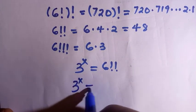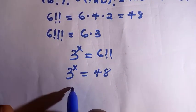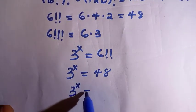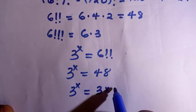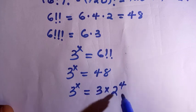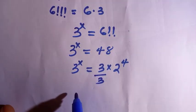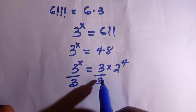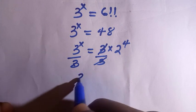Then we have 3 to the power x equals to 48. I think we are getting away with factorials. Then this 48 is 3 multiplied by 16, and 16 is 2 raised to the power of 4. If I divide both sides by 3, we have these two cancelled and this one becomes 3 raised to the power of x minus 1 equals to 2 to the power of 4.